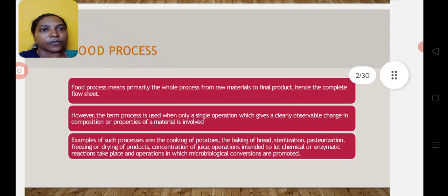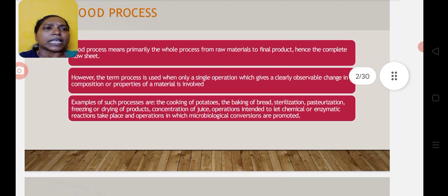Coming to the food process definition, it is the whole process from raw material to final product and is represented by a flow sheet. Examples of this process include sterilization, pasteurization, and concentration of juice.